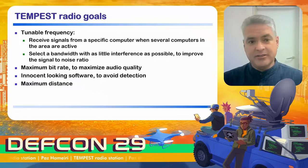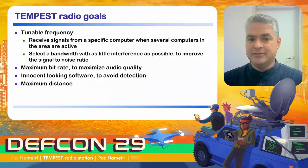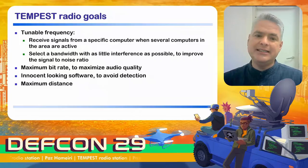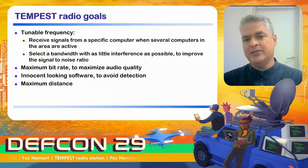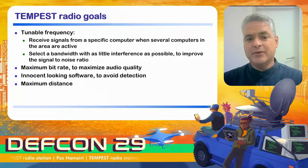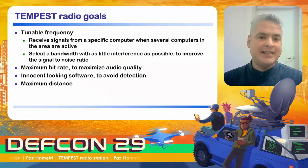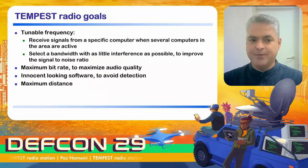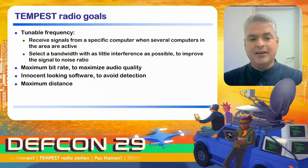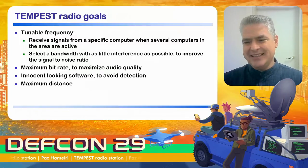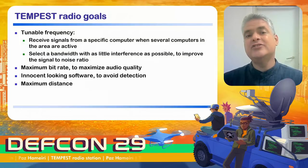The second reason for tunable frequency is that if you can choose the frequency, you can find a relatively quiet frequency band with as little interference as possible, transmit the data there, and get a good signal-to-noise ratio, which is important for reception. Another goal was maximum bitrate to maximize audio quality. The third goal was innocent-looking software to avoid detection. And last but not least, trying to achieve maximum distance.